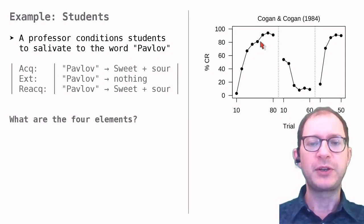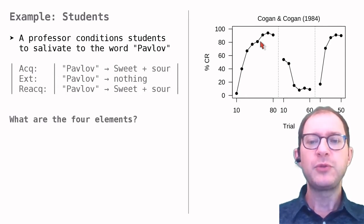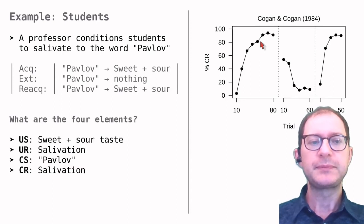Note that salivation is not voluntary. The students were not trying consciously to salivate when hearing Pavlov. It is the more primitive, unconscious part of the brain that does this learning. This is typical of Pavlovian learning, and we will see in later lessons that it sometimes works against our better judgment. By now, it should be easy to identify the four elements of this experiment as follows. The US is the sweet and sour taste of the lemonade powder, the UR is salivation, the CS is the word Pavlov, and the CR is salivation again.